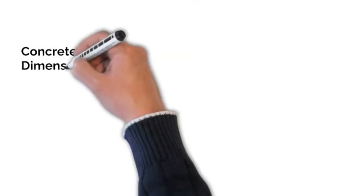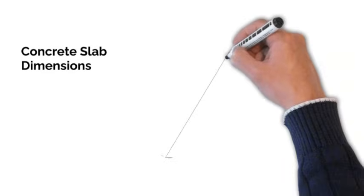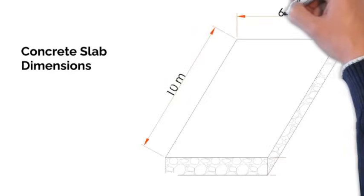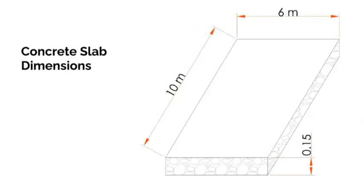What are the dimensions of the slab in question? The slab is 10 meters long, 6 meters wide, and has a thickness of 150 millimeters, which is about 6 inches. This is the thickness that we have to cast.